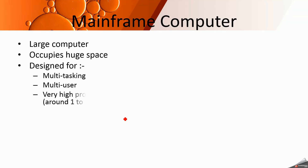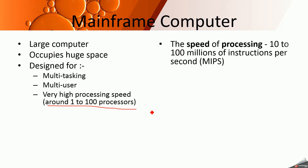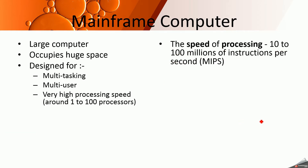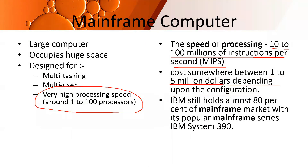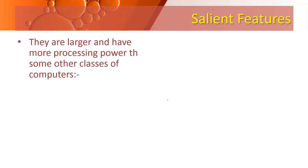It performs more than one task at a time with very high processing speed — around 1 to 100 processors are used. The speed of processing is around 10 to 100 million instructions per second. Tasks that would take weeks on a personal computer can be done in seconds using a mainframe. It costs somewhere between 1 to 5 million dollars depending on configuration. IBM holds almost 80% of the mainframe market with its popular IBM 390 series.